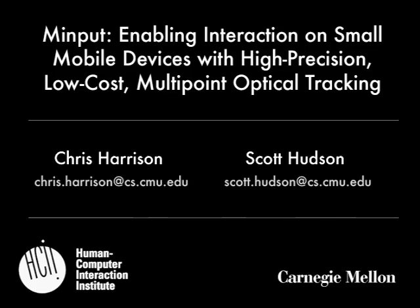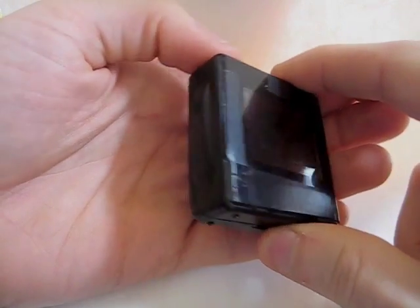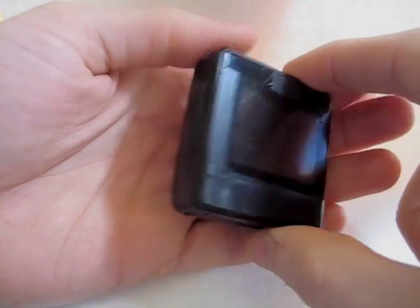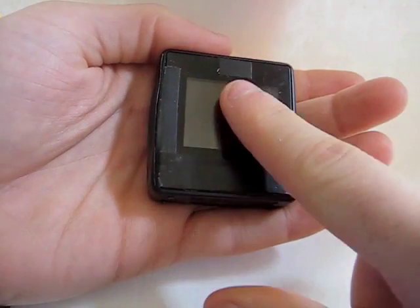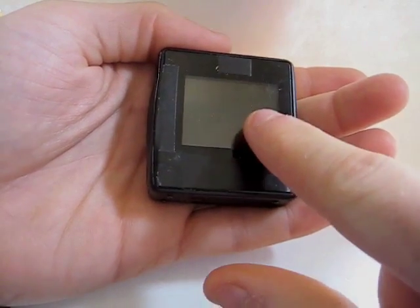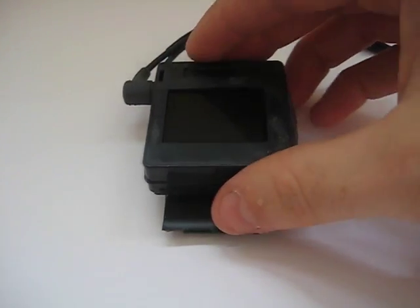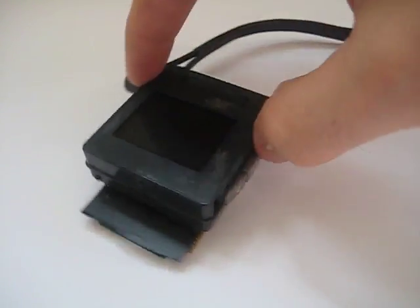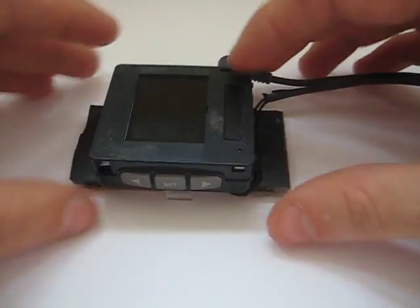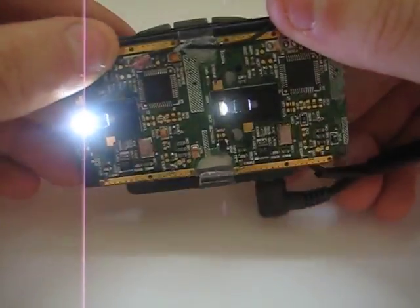We present MinPut, an input technique for miniature mobile devices — ones too small for practical touchscreen use and with limited room to accommodate physical buttons. Our technique takes advantage of high-precision and low-cost optical sensors, like those found in optical mice.